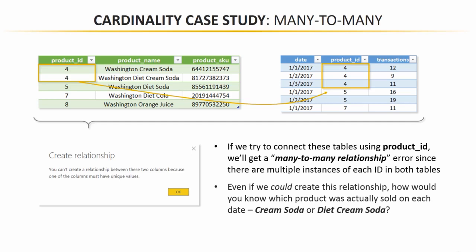Even if we had some magical way to force this relationship to stick, it really just doesn't make sense logically. We know that product number four was sold 12 times on January 1st, nine times on the second, 11 times on the third. But since ID number four is associated with multiple product names, how do we know how many of those transactions were for Washington Cream Soda versus Washington Diet Cream Soda? There's no way to make sense of this data with the tables in this form.